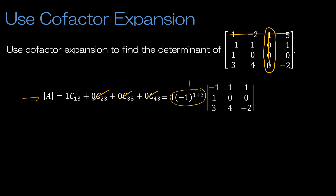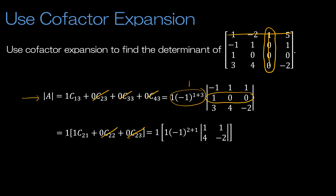Trying to minimize work, I see a great row with a couple of zeros. I take 1 times C(2,1) — row 2, column 1 — removing that row and column leaves: 1, 1, 4, negative 2. Notice this is 2+1, so negative 1 to an odd power gives negative 1 on the outside. Then negative 2 minus 4 is negative 6, multiplied by negative 1 gives positive 6.